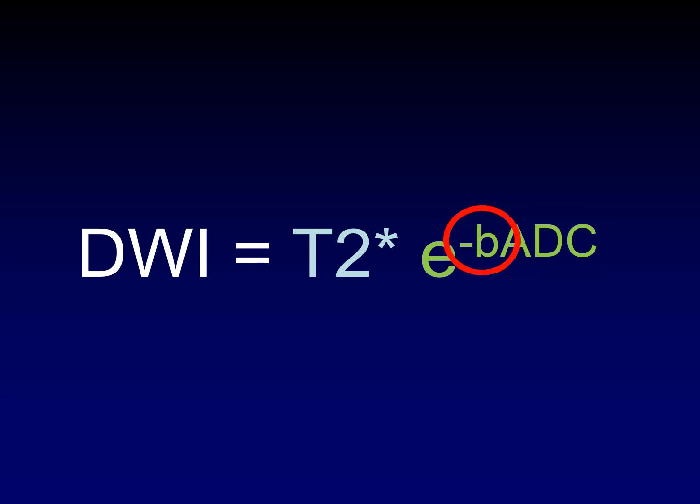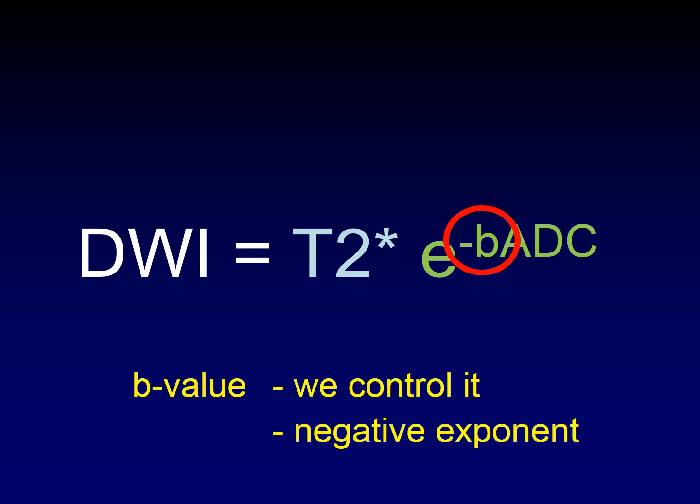B is a number that we control. We put this into the scanner. At my institution, we use a B value of 1,000 when we're doing DWI, but you can use 500 or 2,000. It's an arbitrary number that we multiply the ADC by. Notice that this is a negative exponent. So as ADC gets larger, diffusion-weighted imaging gets darker. As ADC restricts, diffusion-weighted imaging gets brighter. That's the effect of that negative exponent.